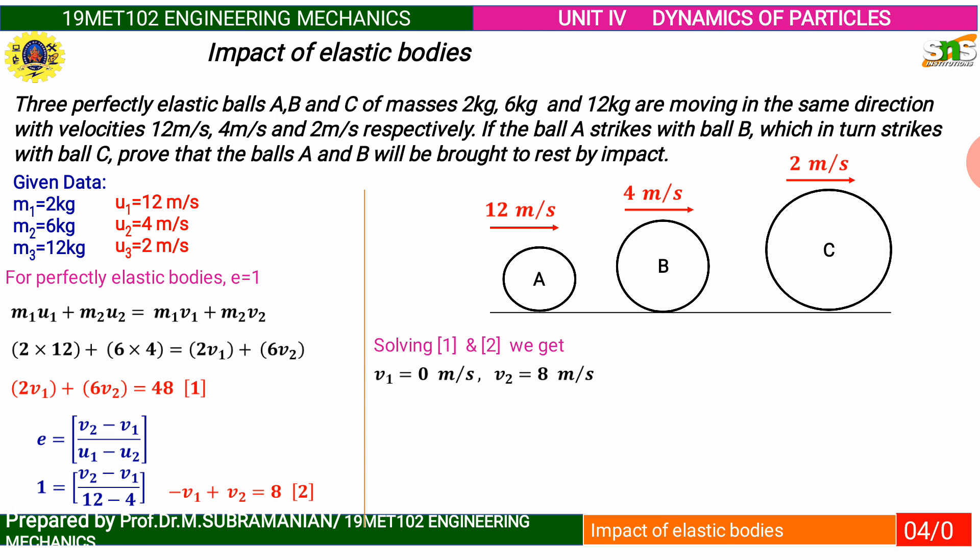From the restitution equation V2 minus V1 over U1 minus U2, we get minus V1 plus V2 equals 8. Second equation. Solving equations 1 and 2, we get final velocity of ball A equal to 0. Then final velocity of ball B, V2 equals 8 meters per second.